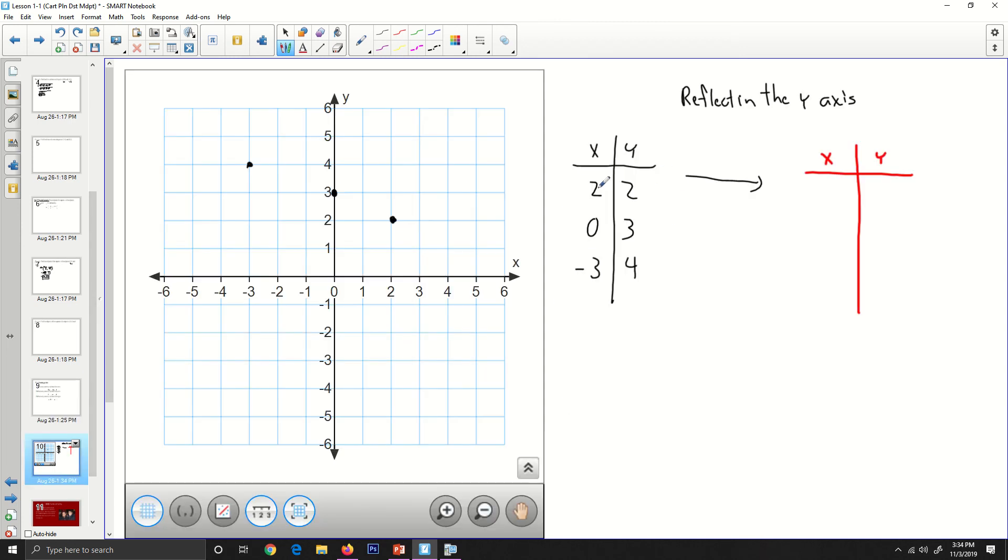So let's see here. If the y stays positive, but the x changes, the new reflected point will be negative 2, 2. 0 stays 0 because 0 is neither positive or negative, so it's still going to be 0, 3. And then negative 3, 4, it was negative to begin with, so it becomes positive and gives me 3, 4. So my reflected points, there would be a point right here. That point stays the same, and then this point comes over there.